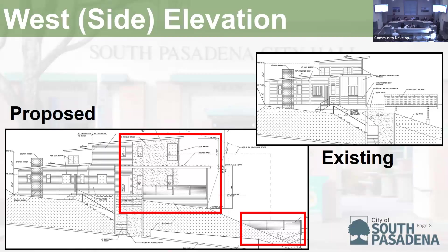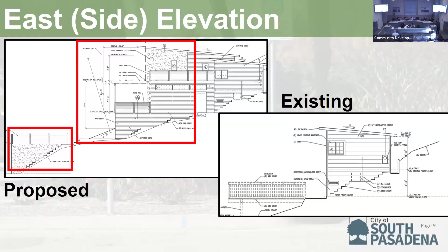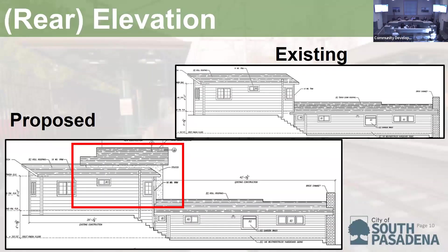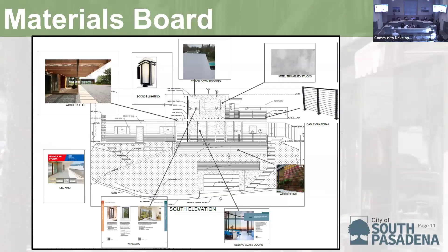There are a total of three development standards the project has yet to meet. Our goal is not just to implement compliance with these standards, but also to integrate any design comments you may have. Here we have the second side elevation, and the rear elevation where the front addition will be least visible. The applicant is proposing new building materials including new railing, a brand new trellis, wood siding, and I will allow the applicant to go into further details if board members have questions.